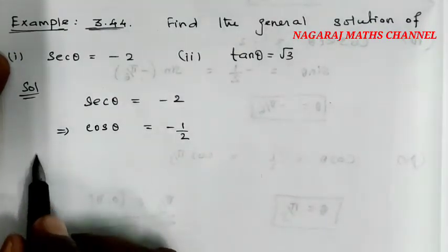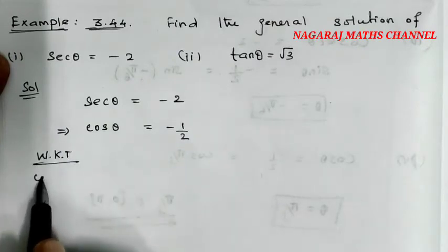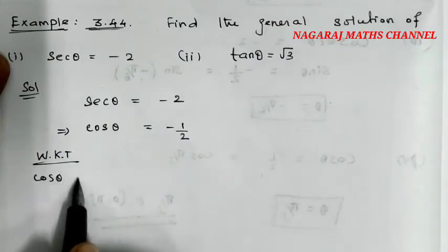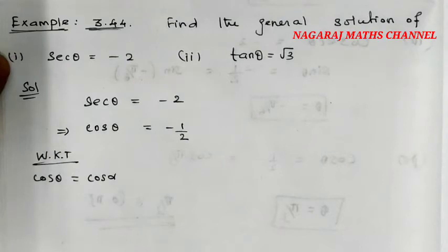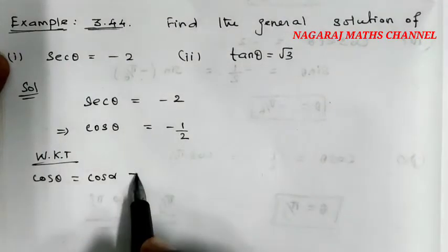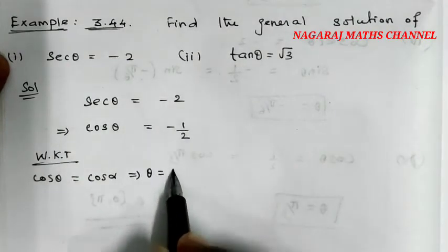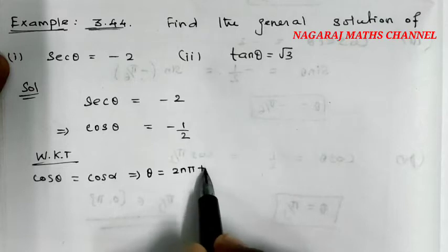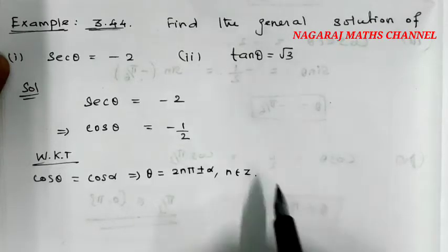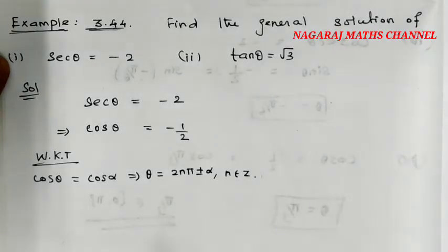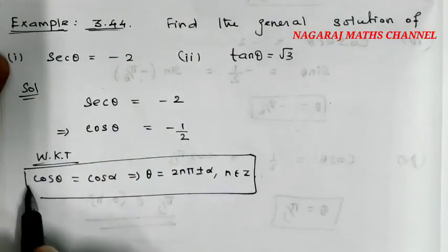We know that cos θ equals cos α gives the general solution of theta as 2nπ plus or minus α, where n belongs to Z. This is the general solution formula.